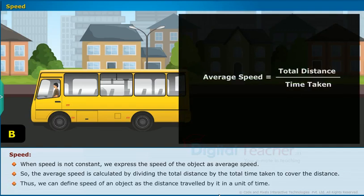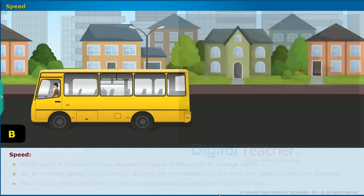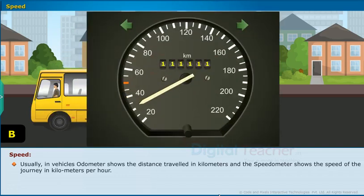Thus, we can define speed of an object as the distance traveled by it in a unit of time. Usually, in vehicles, odometer shows the distance traveled in kilometers and the speedometer shows the speed of the journey in kilometers per hour.